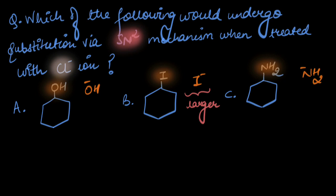The larger the size of the ion, the more spread out the charge is, the lesser is the charge per unit area and the more stable the ion is. So could the answer be option B? Wait — here we are not supposed to compare the leaving groups amongst themselves.